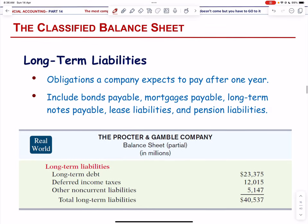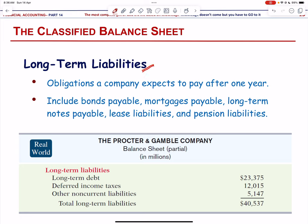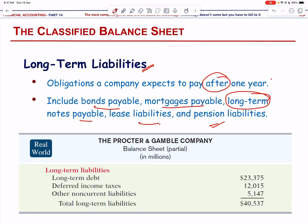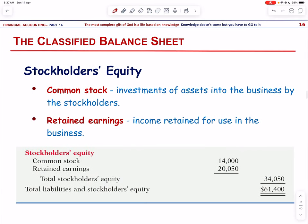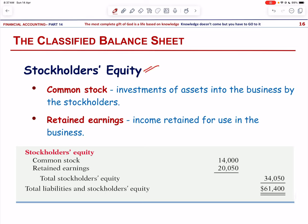Long-term liabilities are obligations the company will pay after one year — they are not paid in the current year. Examples include bonds payable, mortgages payable, long-term notes payable, lease liabilities, and pension liabilities. The third component of a balance sheet is stockholders' equity, which has two items: common stock, representing the investment of assets into the business by stockholders, and retained earnings, which is income retained for use in the business and not distributed to shareholders.